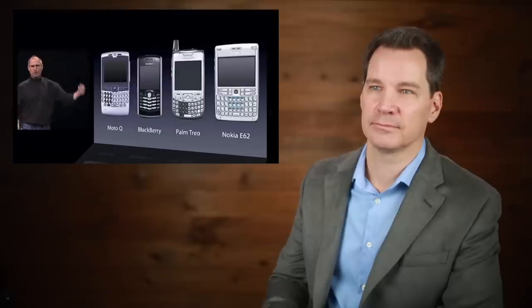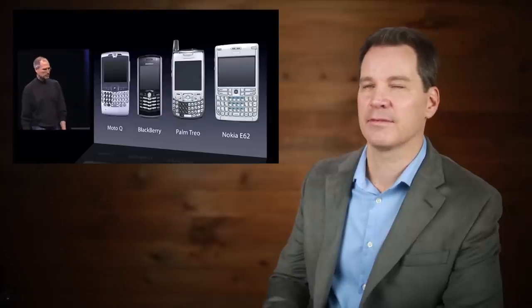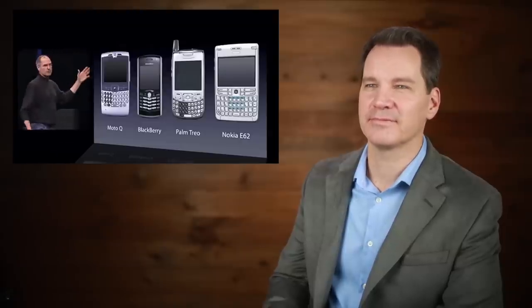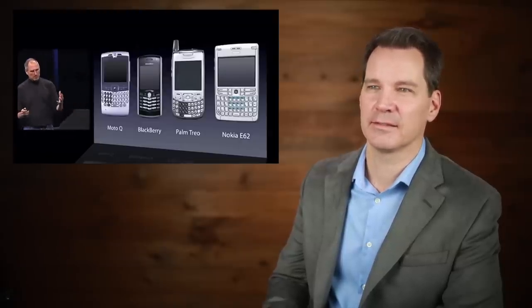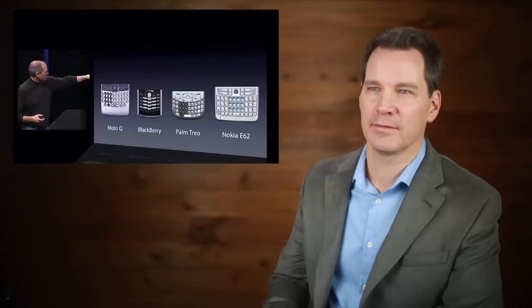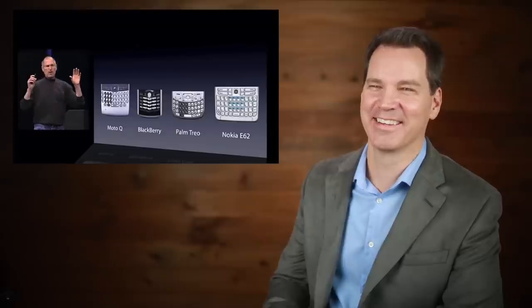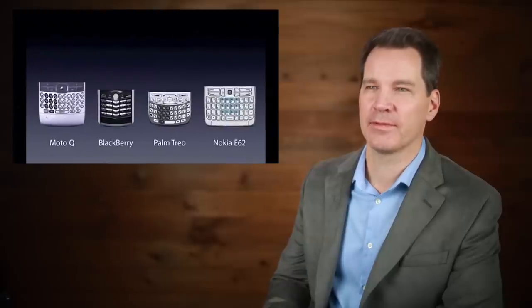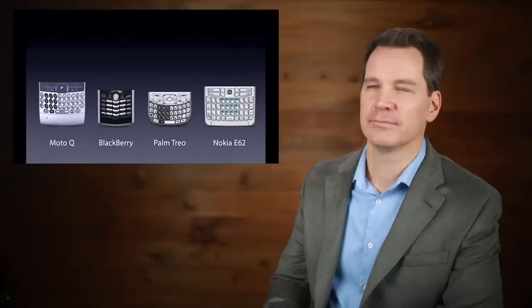I mean, here's four smartphones, right? Motorola Q, the Blackberry, Palm Treo, Nokia E62, the usual suspects. And what's wrong with their user interfaces? Well, the problem with them is really sort of in the bottom 40 there. It's this stuff right here. They all have these keyboards that are there whether you need them or not to be there. And they all have these control buttons that are fixed in plastic and are the same for every application.